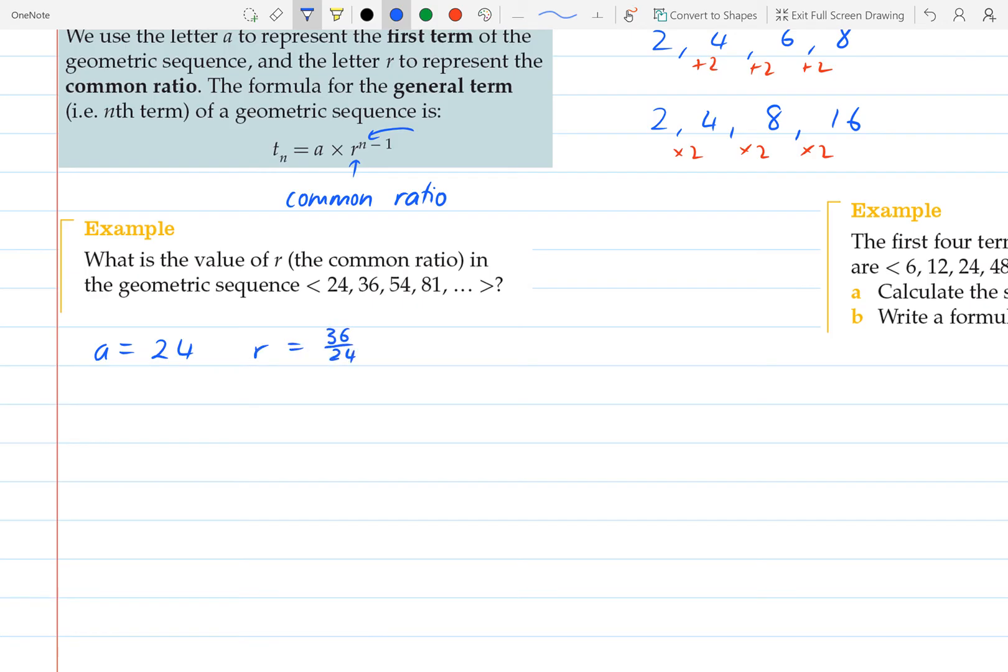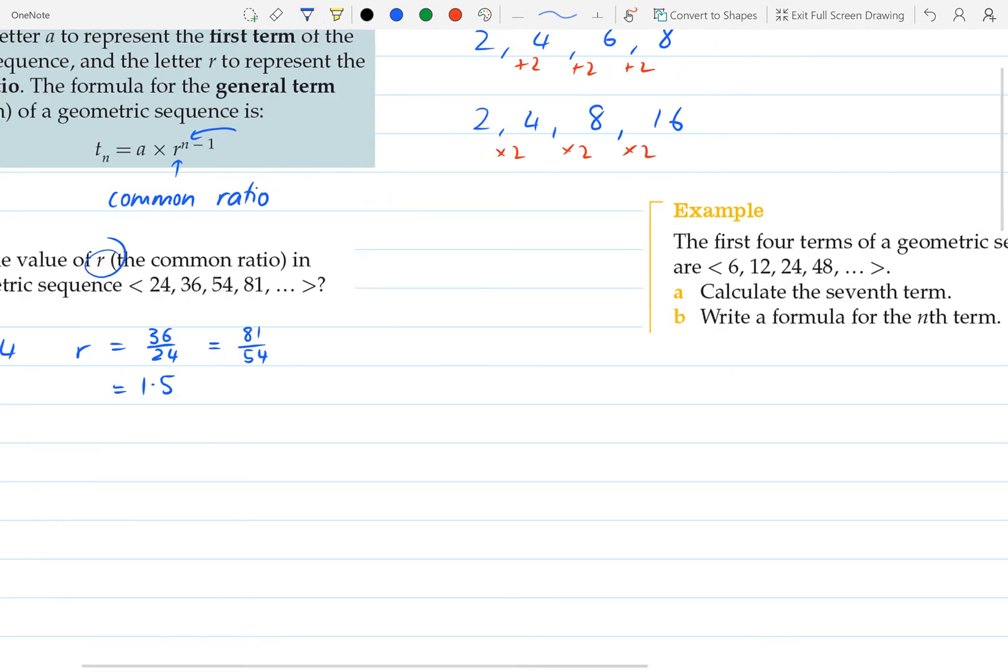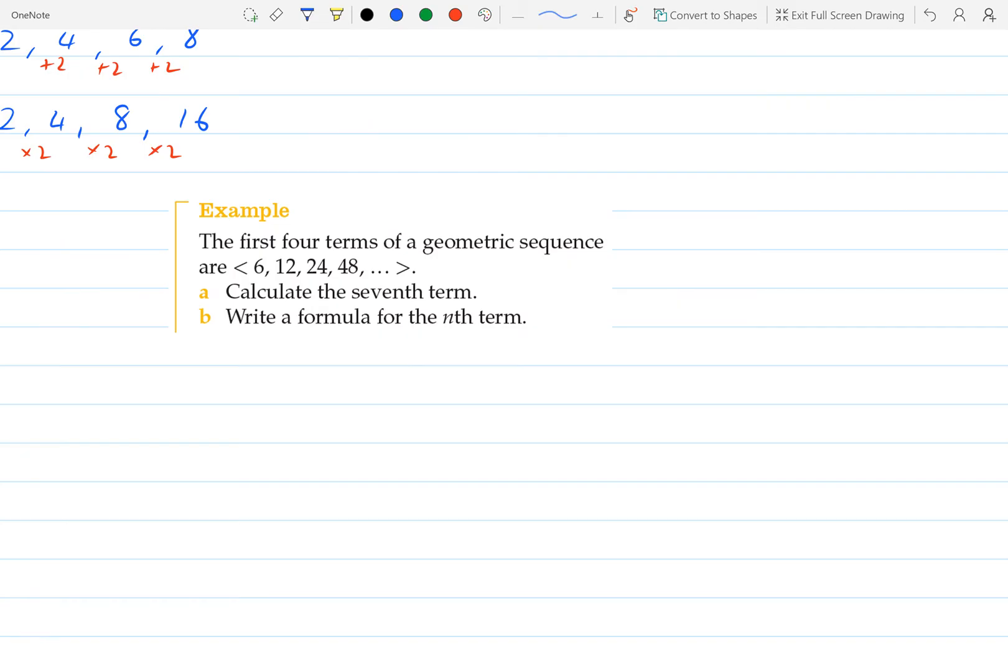Okay, so looking at this example here, first of all, we'll identify the first term, which is 24. And then to look at the common ratio, we'll just take the second term and divide it by the first term. So in this case, we're going to get 1.5 for that common ratio. And if you want to confirm it, just check with another set of terms. So 81 divided by 54, and just check that that is also 1.5. And I believe you'll find that is 1.5 as well.